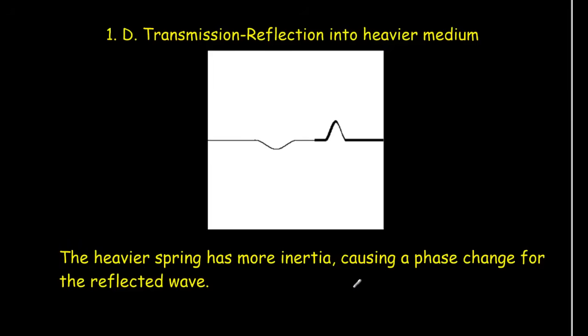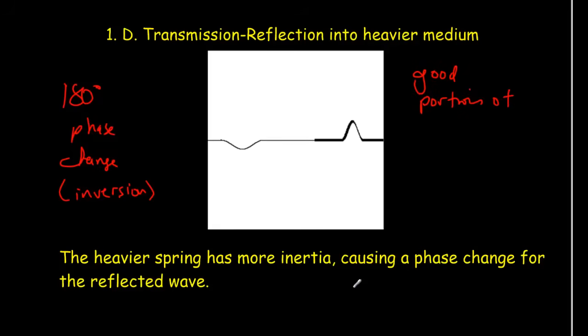So let's consider what happens when we have a pulse sent in from a light spring, from a lighter medium to a heavier medium. A couple things to notice. One thing is we do get the inversion. We do get the 180 degree phase change, also called an inversion. And the second thing is, and maybe it's not showing so well here, but there's a good portion of that incident wave gets reflected back. A good portion of incident wave is reflected back. And generally, not so much gets transmitted through to the second spring.